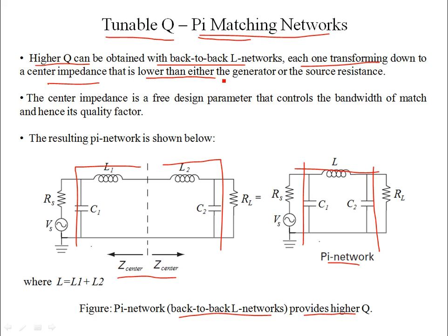The central impedance — call it Z_center — must be set less than the minimum of RS (source resistance) and RL (load resistance). If you set it beyond the minimum of RS and RL, you compromise both the bandwidth of the match and the power being transferred.